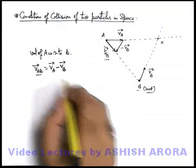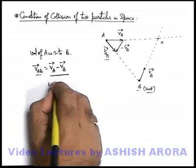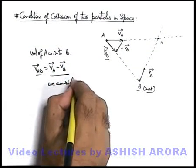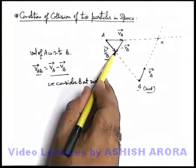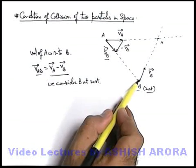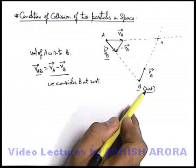So be careful about this, this relative velocity, when we consider, here we consider B at rest. If this relative velocity has a direction directed towards B, we can simply state A is going to hit B, because B we are considering at rest.